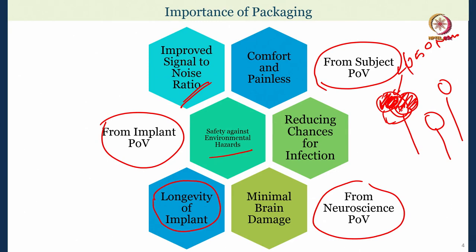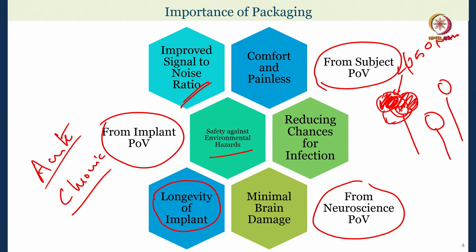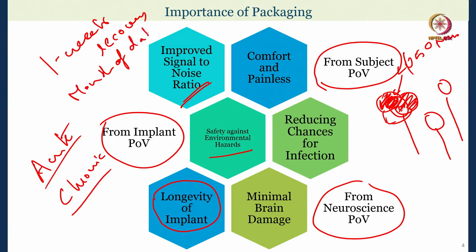Along with reducing measurement errors, we also need longevity of the implant. There are acute neural experiments and chronic experiments. For short-term studies we may not need sensor longevity, but for long-term recording — say one week or a month — we need the device to be intact. Typically when we implant devices on a rat brain, we might look at one week of recovery period after implantation, followed by a month of data collection. We need the device to stay intact for that entire period.